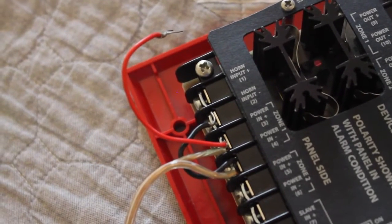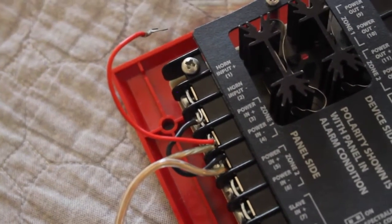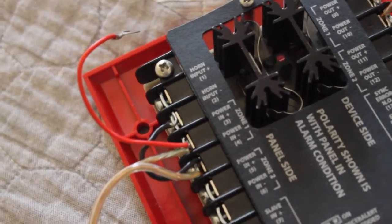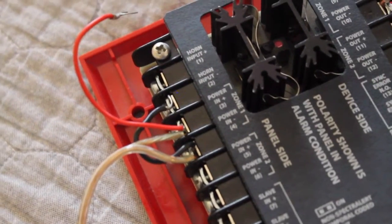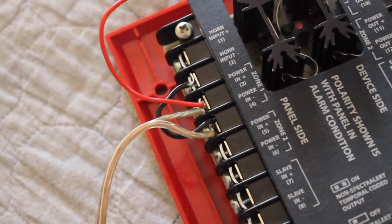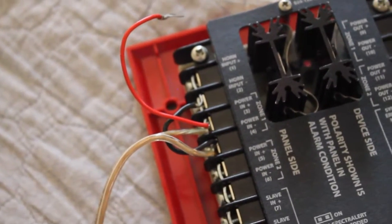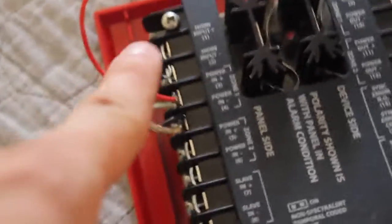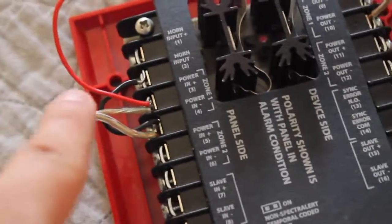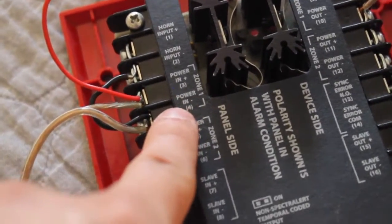So, I have a little bit of a treat here. I decided to remove the jumper wire between the horn input and the zone one input. On your typical four-wire panel, you would have the horn output, whatever NAC is controlling the horns, you would have it go into this input here, and then I think the strobes would just go into this input here.